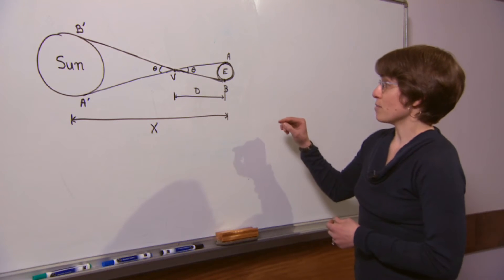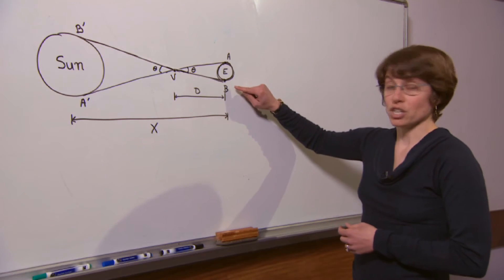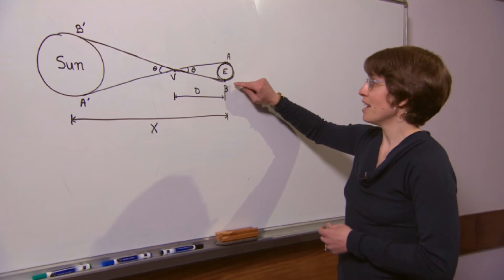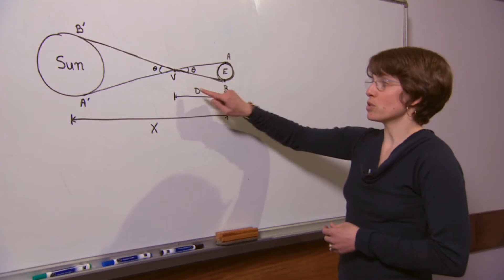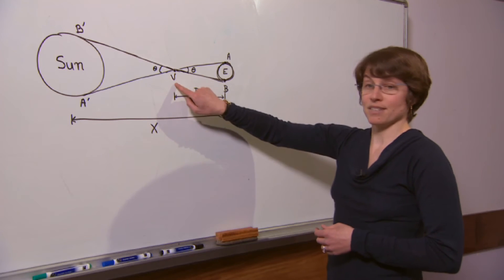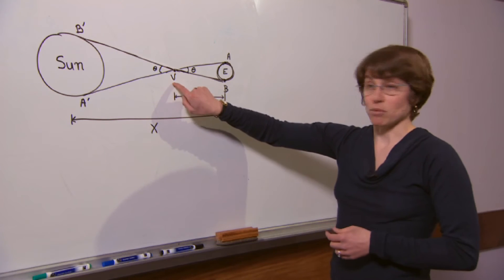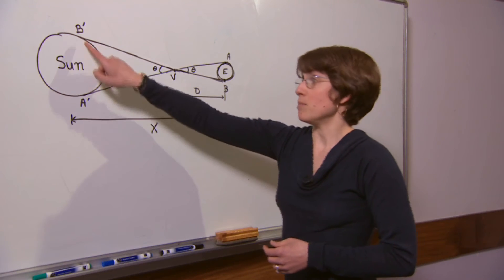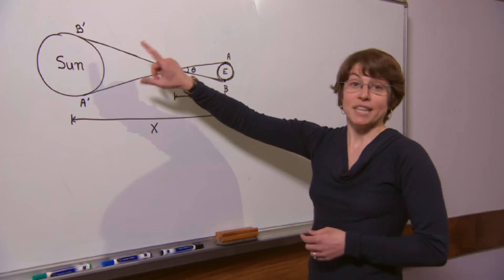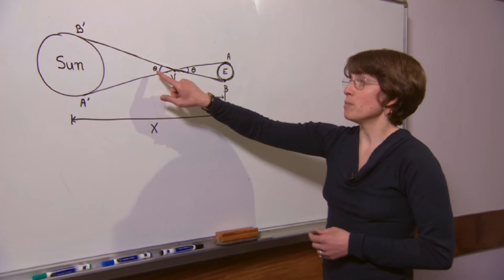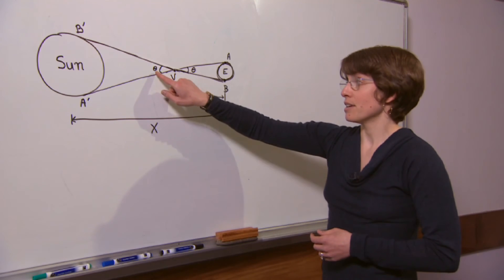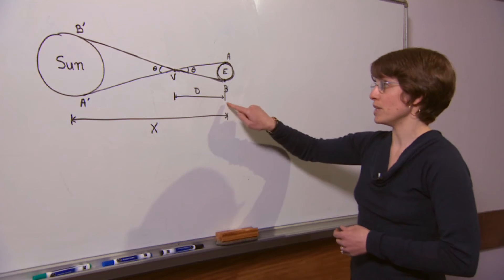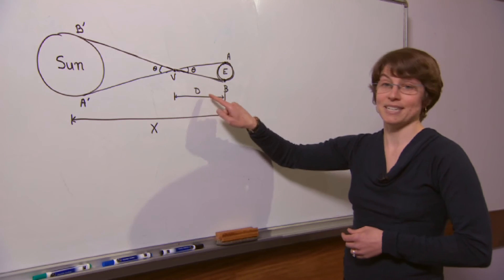He sent two groups of astronomers to two different locations widely separated on the earth. I'm going to call these locations A and B and they both observed the transit of Venus, denoted here as a dot labeled V, on the surface of the Sun A' and B'. By measuring this angular separation they would be able to determine theta and then by using geometry and trigonometry they would be able to get the distance between the earth and Venus d.